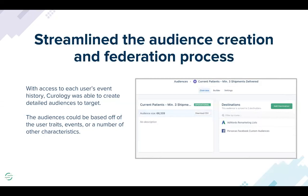The third element of how the audience creation process has changed the game for us is that because it combines both the events a user takes on our platform in their lifecycle and also the traits, we now often use events that are much more real time. Because we knew we weren't updating audiences frequently, we typically used relatively stable criteria. But now since updates happen automatically with Personas, we actually use events that can happen within an hour timeframe versus typically defining audiences by things that would happen over days or weeks. That's allowed us to completely change how we define those audiences.